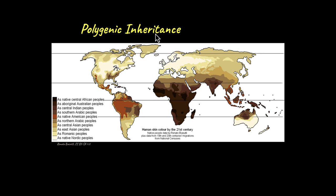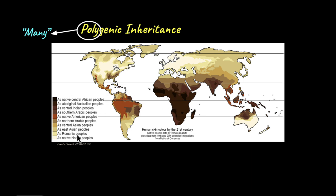From the name itself, you can probably figure out that 'poly' refers to the fact that there are many genes that control the expression of this trait, leading to a continuous variation of the different phenotypes expressed.